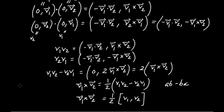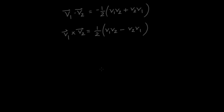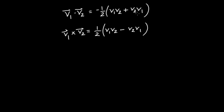Alternatively, you could say that the commutator between the quaternions V1 and V2 is equal to two times the cross product V1 cross V2. And to summarize, here are those two results we've just derived, showing the relation between the dot product and quaternion multiplication, and also the relation between the cross product and quaternion multiplication.